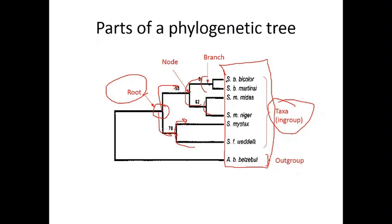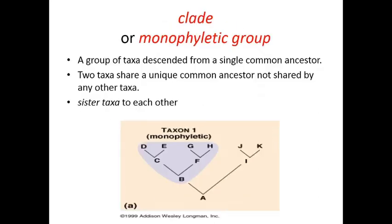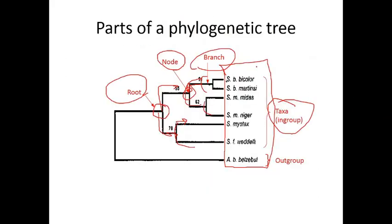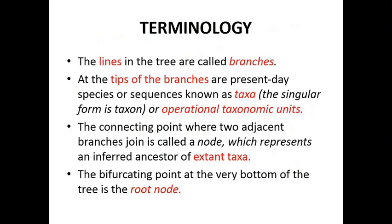Branch banne ke baad agar ek jagah se waapas branch split hoti hai to usko node kaha jata hai. To summarize the first few terms: taxa means present-day organisms at the individual ends of the classification. Where branching starts is called root. Where branching splits again is called a node. The lines are called branches, and the tip of a branch is called a taxa.